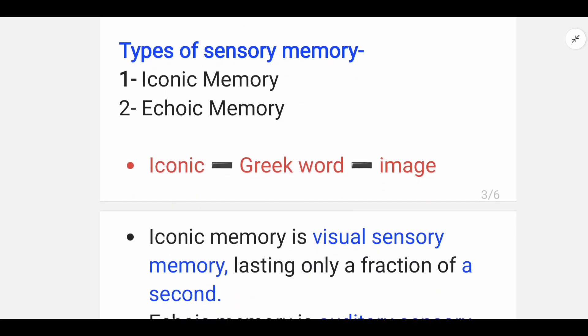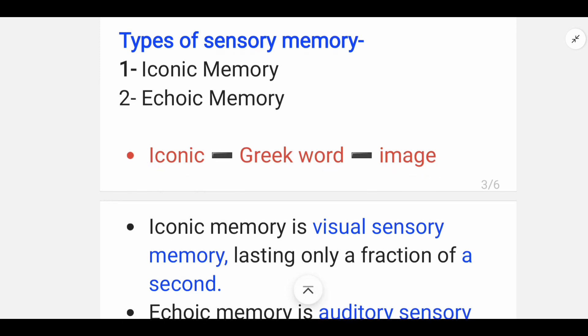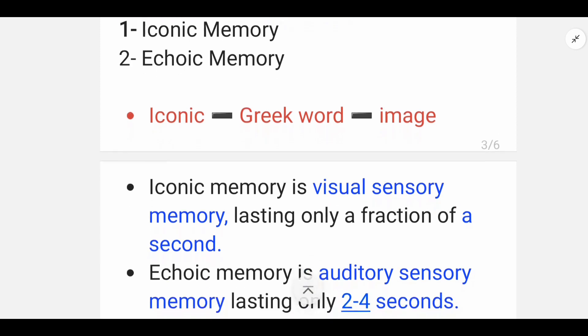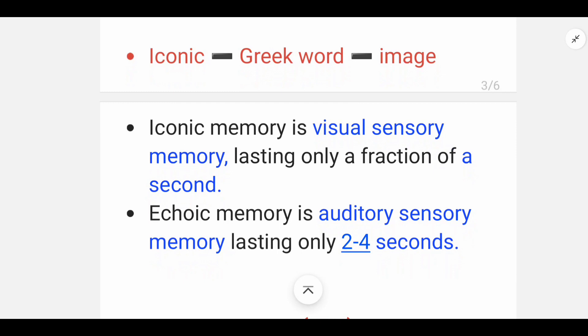Iconic is from the word icon, which is a Greek word and its meaning is image. Basically, iconic memory is our visual sensory information. This is our input. The information is used for one second. This is visual sensory memory. Echoic memory is auditory sensory memory. This is two to four seconds.